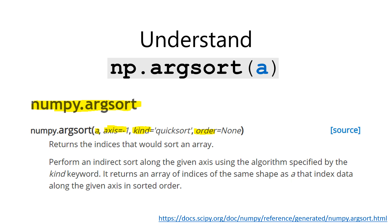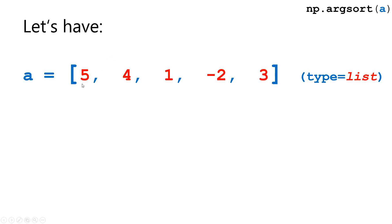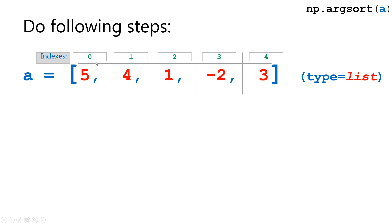In this example we have a very simple list of numbers. We have a equals [5, 4, 1, -2, and 3], with type equal to list. In order to understand the logic of this function, the first thing in my opinion is to make indexation of elements in the array, so it's 0, 1, 2, 3, and 4.